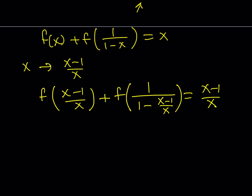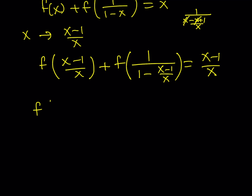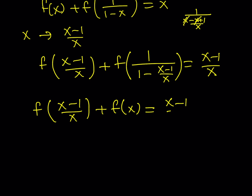Simplifying the second expression: 1 over (1 - (x-1)/x) gives x minus x plus 1 over x — the x cancels out, leaving f(x). So equation number 3 is: f((x-1)/x) + f(x) = (x-1)/x.